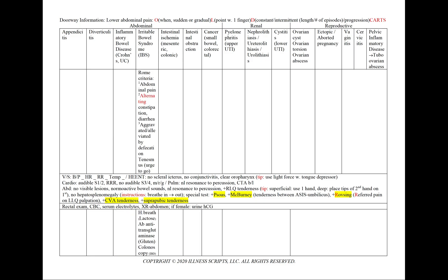In irritable bowel syndrome, we'll use the Rome criteria, which includes abdominal pain, alternating constipation and diarrhea, and pain aggravated or alleviated by defecation. We can also see tenesmus. Our workup focuses on ruling out other conditions: a hydrogen breath test to rule out lactose intolerance, antibodies to anti-transglutaminase to rule out gluten enteropathy, and a colonoscopy to rule out IBD.